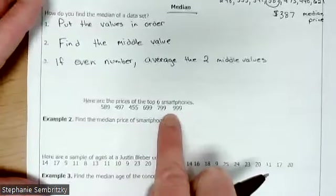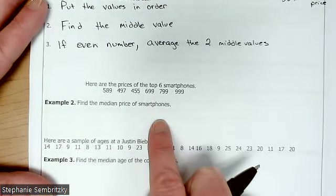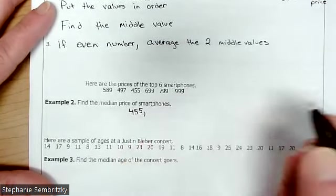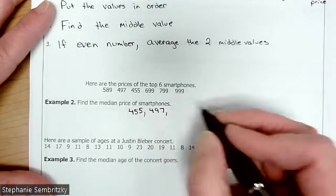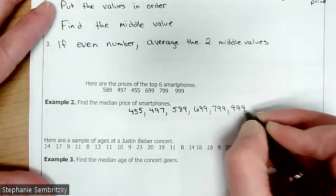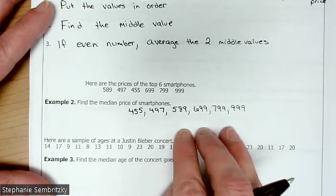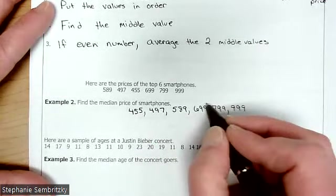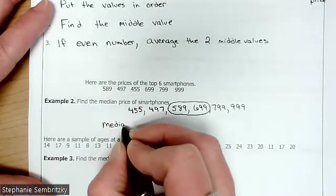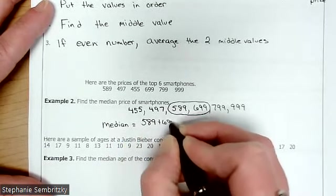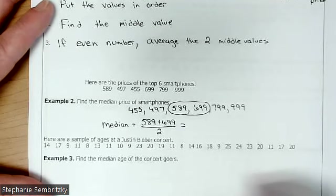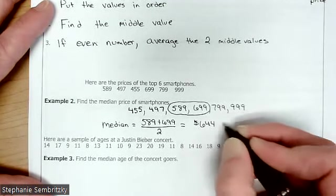So what if we had six values? So we have the prices of the top six smartphones and we want to find the median price. So we're going to list them out in order. And we're doing these by hand right now. We'll show y'all how to do it in the calculator. 497, 589, 699, 799, 999. So when you're looking for the middle here, when we go to the middle, there's two values in the middle, not just one. So the median would be the average of those two. 644 dollars is the median price.